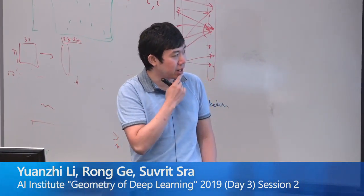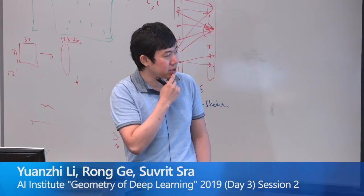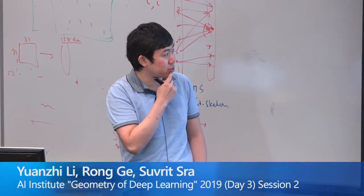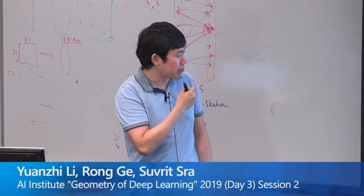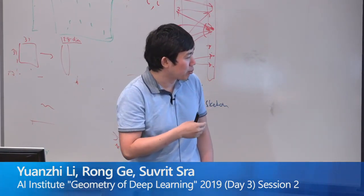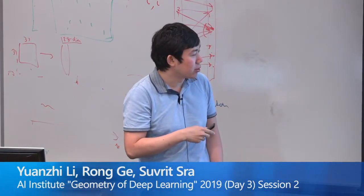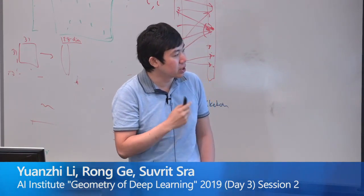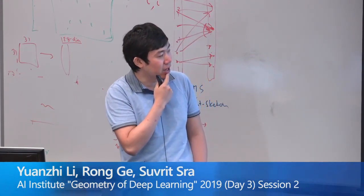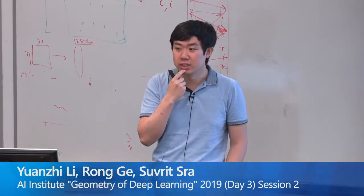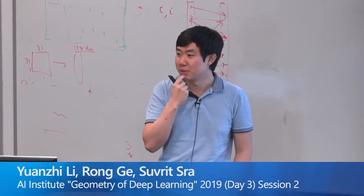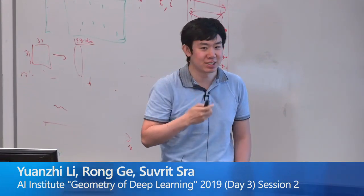Rohis is an undergrad at Duke. Xiang is a grad student with me, and many people from Princeton: Holden, Yi, Zhiyuan, Wei, and Sanjeev. Zhiyuan is probably somewhere in the audience.